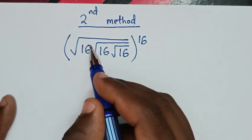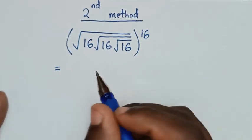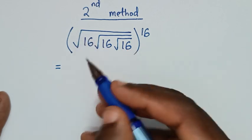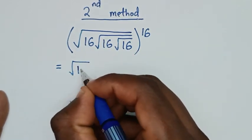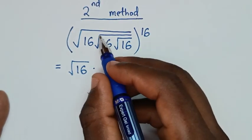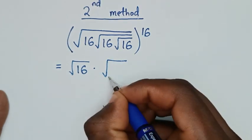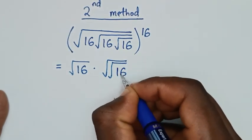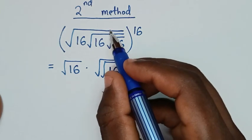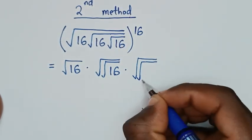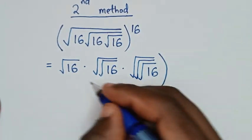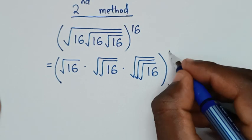So this 16 here — we separate each square root. This first 16 is under 1 square root, so it will be square root of 16. Then times this 16, which is under 2 square roots, so it will be square root of square root of 16. Then times this 16, which is under 3 square roots, so it will be square root of square root of square root of 16, bracket, power of 16.